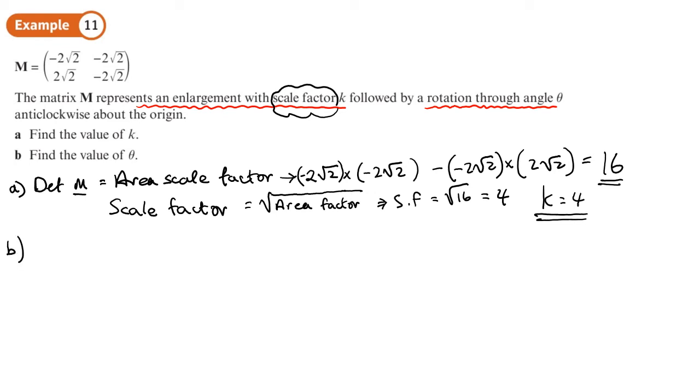Part b. Determine the value of theta. Now, what we've got here is enlargement of the scale factor, which is this matrix here, where we're scaling in both directions by 4. And that gets multiplied by this rotation matrix, okay? And this rotation matrix, the general form is going to be cos theta minus sin theta, sin theta, cos theta. And we know that that gives us this matrix, the negative 2 root 2, 2 root 2, negative 2 root 2.